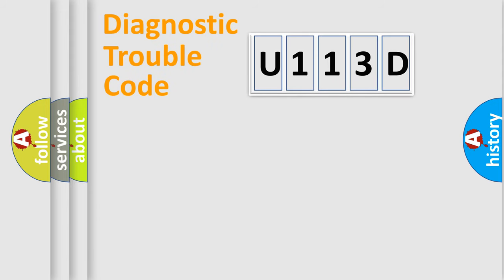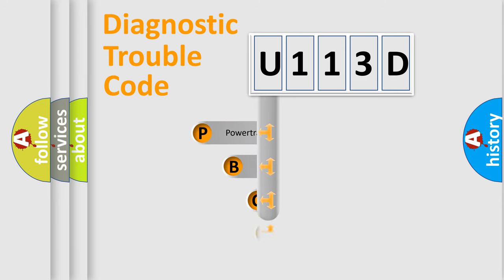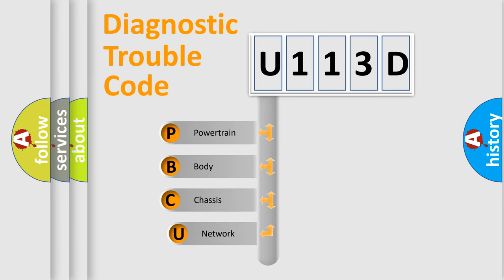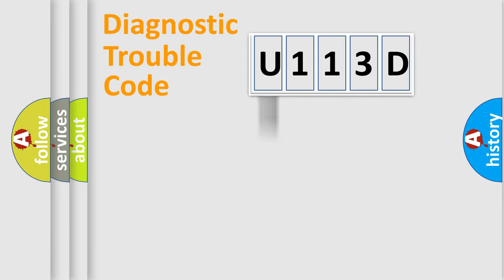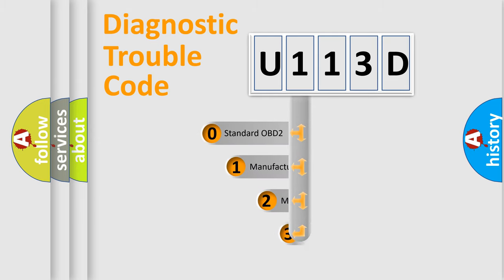Let's do this. First, let's look at the history of diagnostic fault code composition according to the OBD2 protocol, which is unified for all automakers since 2000. We divide the electric system of an automobile into four basic units: Powertrain, Body, Chassis, and Network. This distribution is defined in the first character of the code.